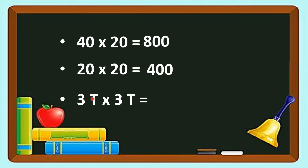3 tens into 3 tens. So 3 tens means 30. So 30 into 30. Here we can multiply 3 into 3. So 3 threes are 9, and 2 zeros will come. So the answer is 900.